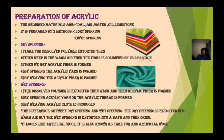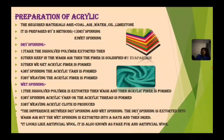For wet spinning, the dissolved polymer is extruded into a bath, and then the acrylic fiber is formed. By spinning, the acrylic thread is formed, and by weaving, the acrylic cloth is produced. The difference between dry spinning and wet spinning is that in dry spinning the fiber is extruded into warm air, while in wet spinning it is extruded into a bath and then dried. It looks like artificial wool and is also known as fake fur.